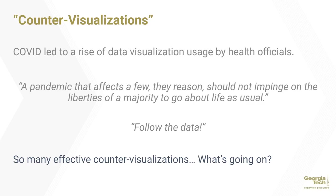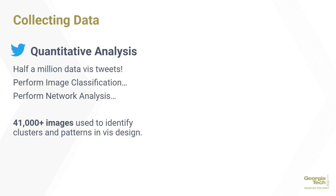This paper seeks to investigate common patterns in these counter visualizations and why they were so effective. The researchers collected data in two parts. First, there was the quantitative aspect: researchers collected over half a million posts from Twitter containing visuals related to the pandemic, which they narrowed down to around 41,000 posts. Image classification was used to identify different chart types, while network analysis was used to identify what groups of individuals the graphics belonged to.